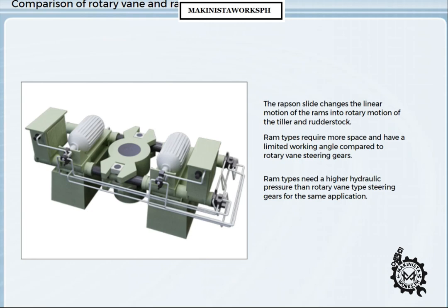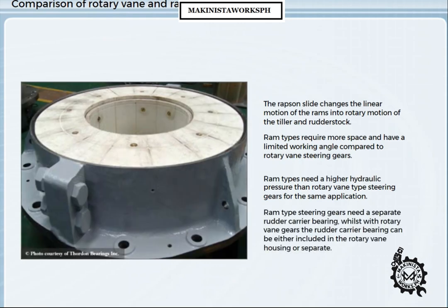Ram type steering gears generally need a higher hydraulic pressure than rotary vane type steering gears for the same application. Because they are connected to the rudder stock through a moving linkage, ram type steering gears need a separate rudder carrier bearing, whilst with rotary vane gears, the rudder carrier bearing can be either included in the rotary vane housing or separate.